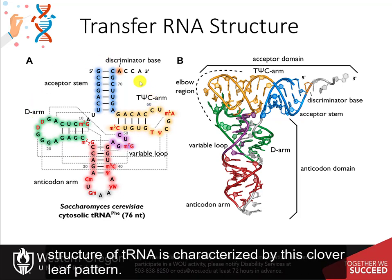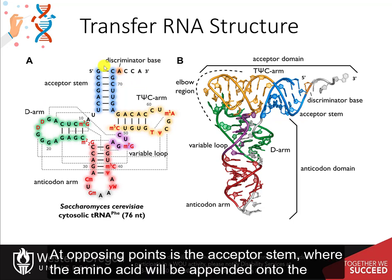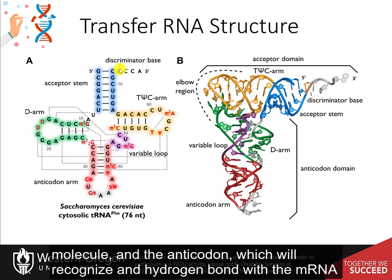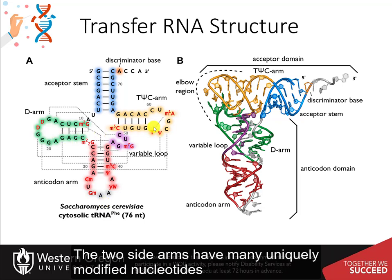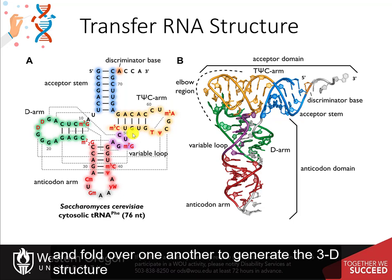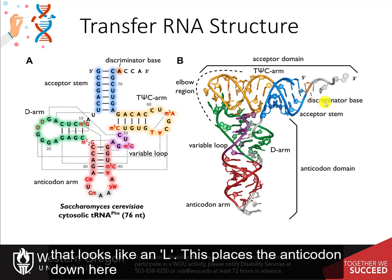The two-dimensional structure of tRNA is characterized by a cloverleaf pattern. At opposing points is the acceptor stem, where the amino acid will be appended onto the molecule, and the anticodon, which will recognize and hydrogen bond with the messenger RNA. The two side arms have many uniquely modified nucleotides and fold over one another to generate the three-dimensional structure that looks like an L.